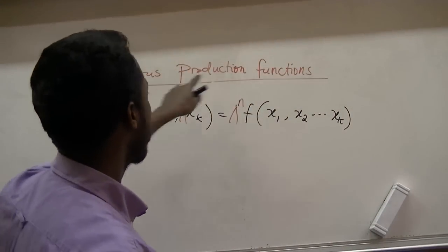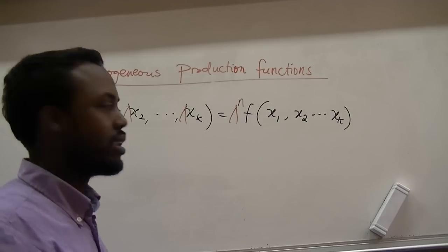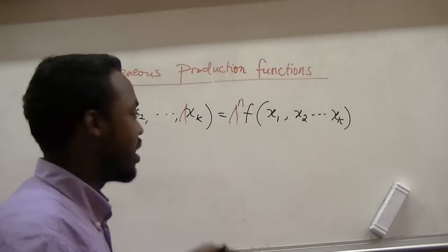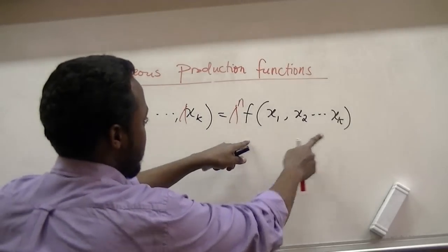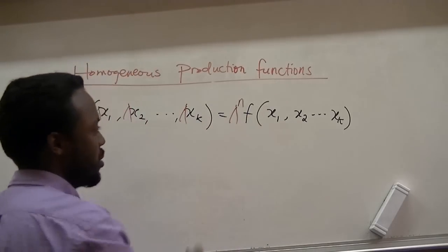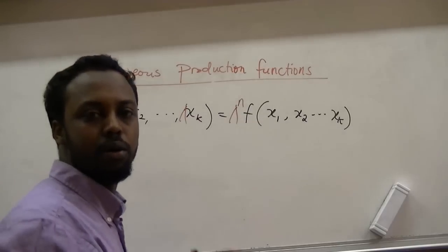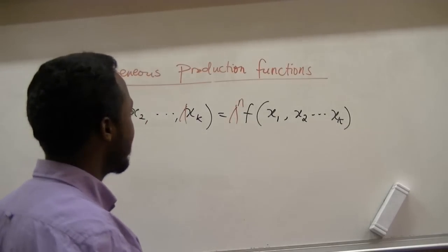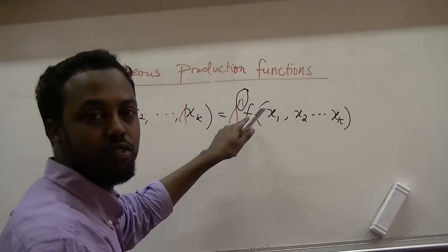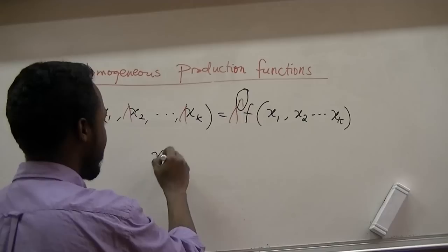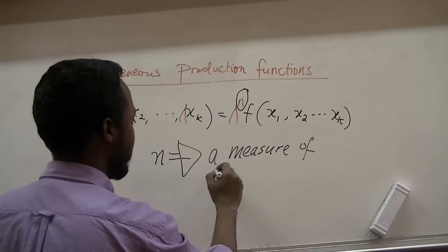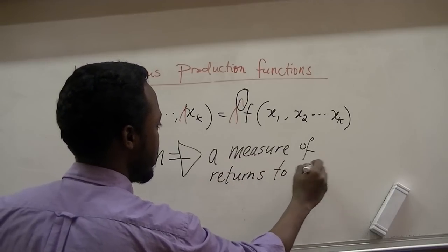Now let's go back to our production functions. If we multiply our inputs by any positive number and we get an output multiplied by that positive number raised to some constant, then we say our production function is a homogeneous function. We want to call your attention to this degree of homogeneity, because in the case of production functions this n is a measure of returns to scale.